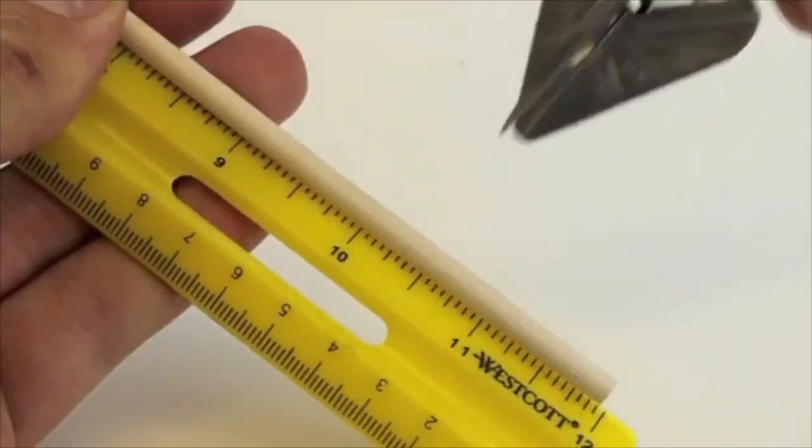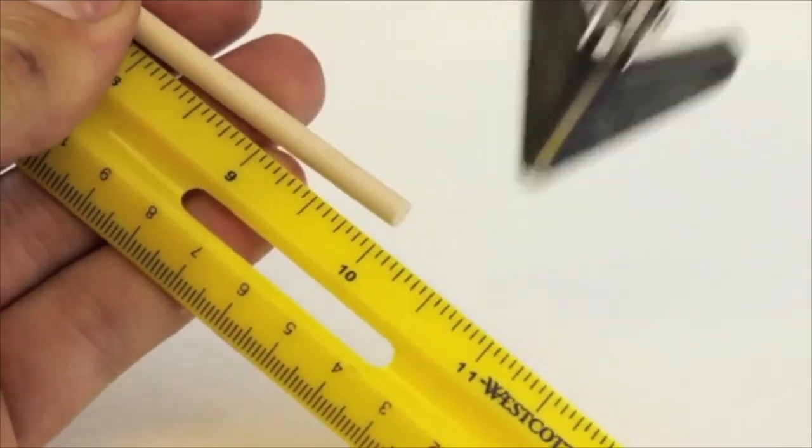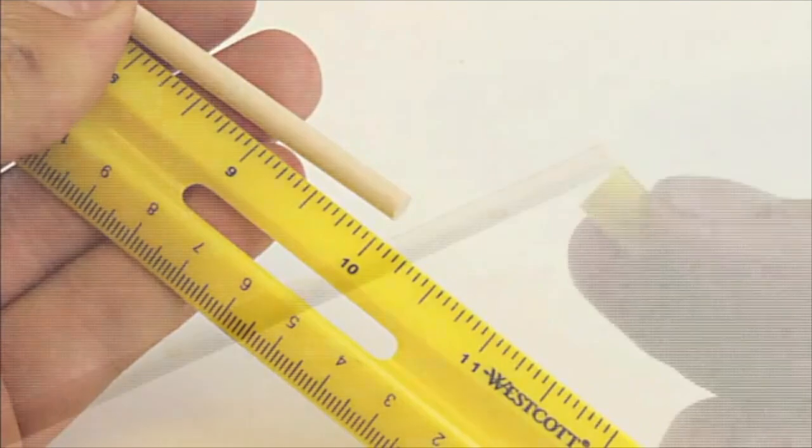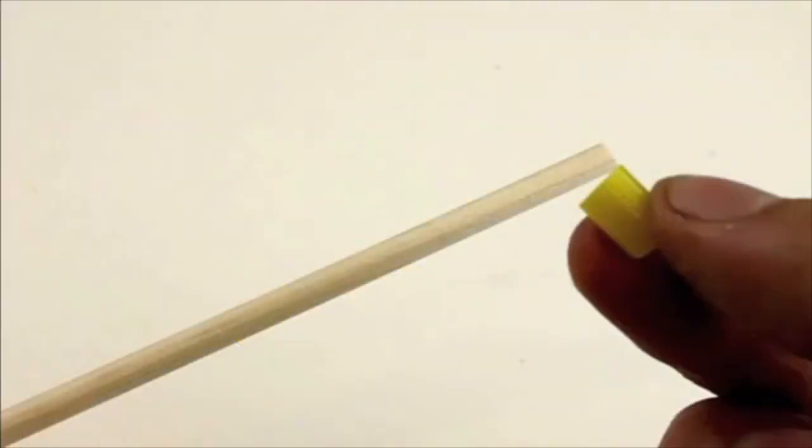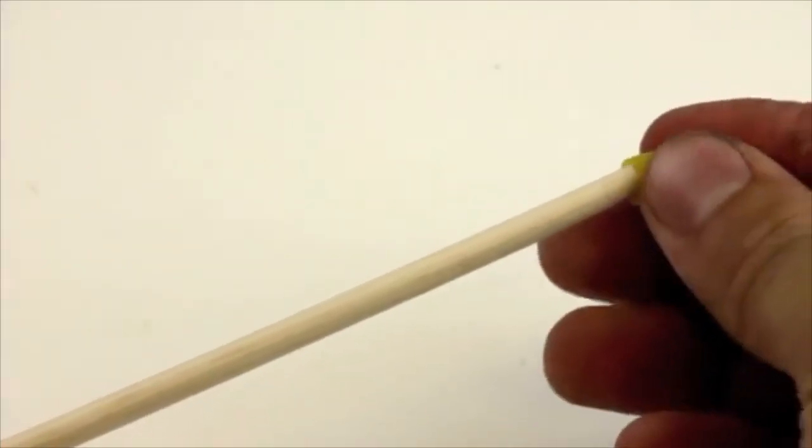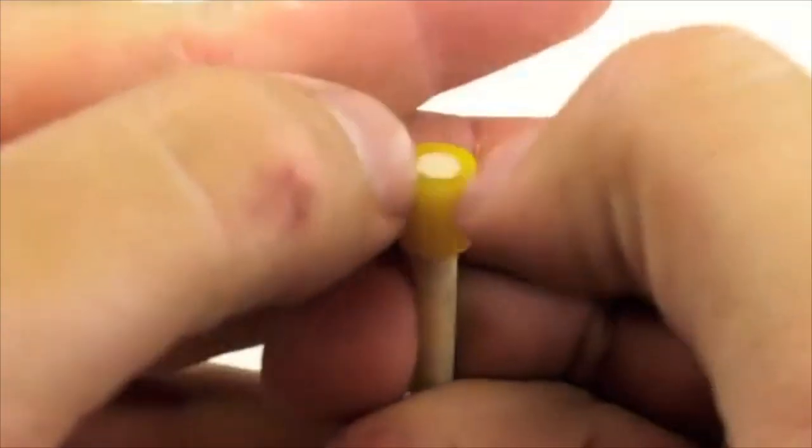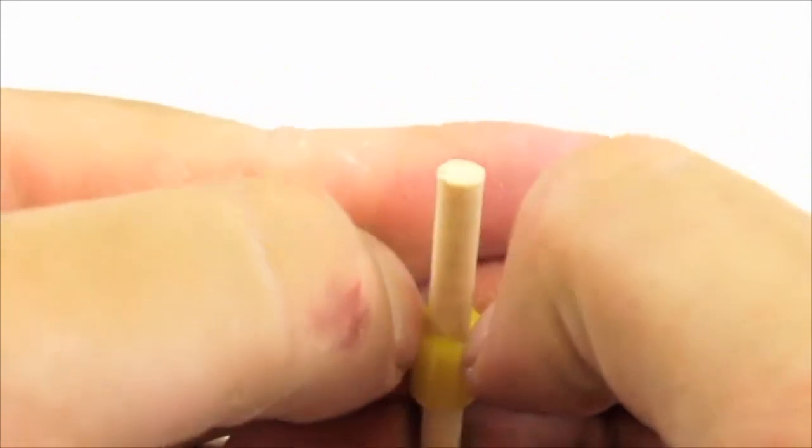Take another dowel and cut it to 250mm which is about 10 inches. Cut a small piece of slide stop and place it onto the end of your dowel. Slide the slide stop down 50mm which is about 2 inches.